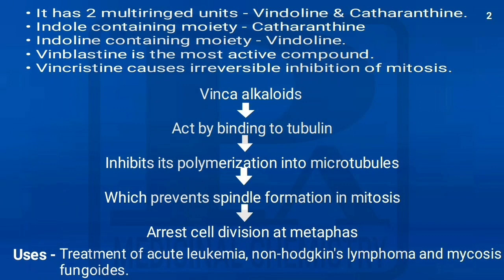To recap, vinca alkaloids have two multi-ringed units: vindoline with an indoline-containing moiety and catharanthine with an indole-containing moiety. Comparing the two drugs, vinblastine is the most active compound. Vincristine causes irreversible inhibition of mitosis. Vinca alkaloids act by binding to tubulin and inhibiting its polymerization into microtubules.